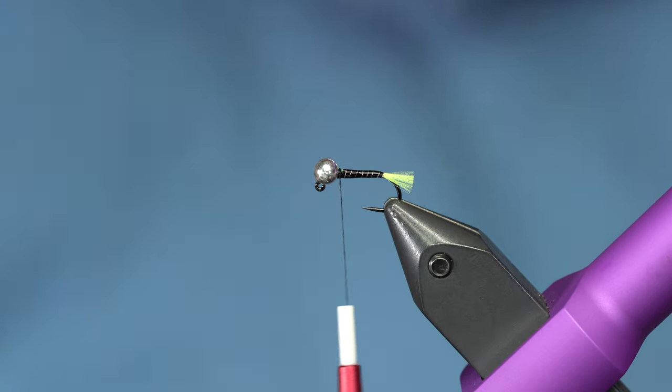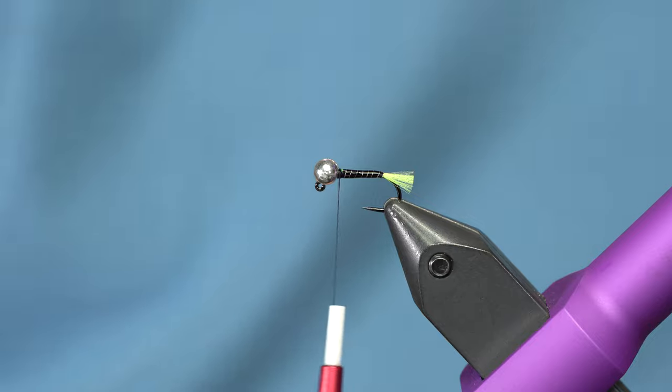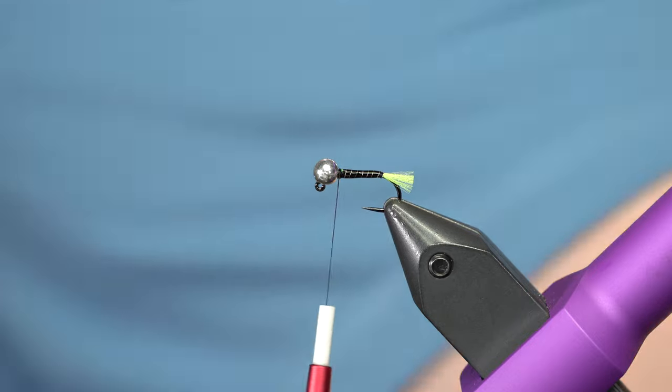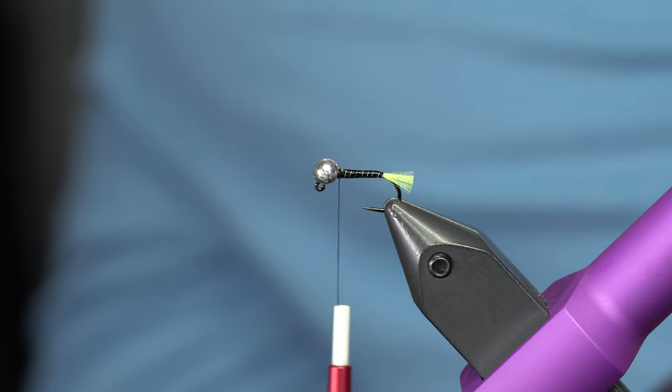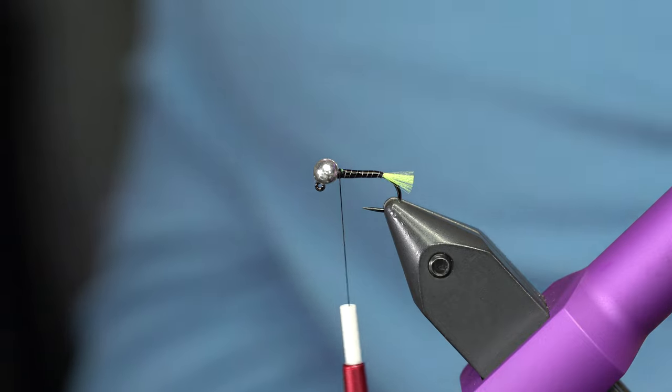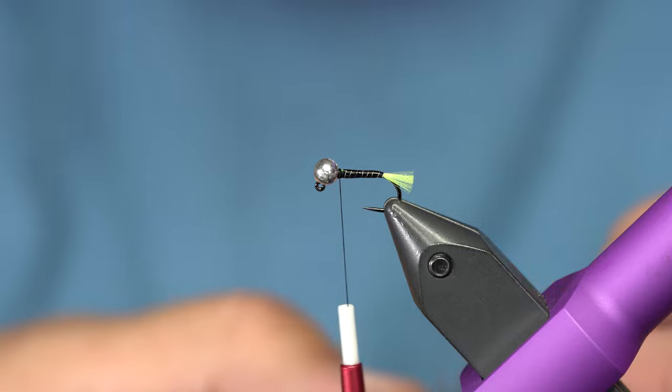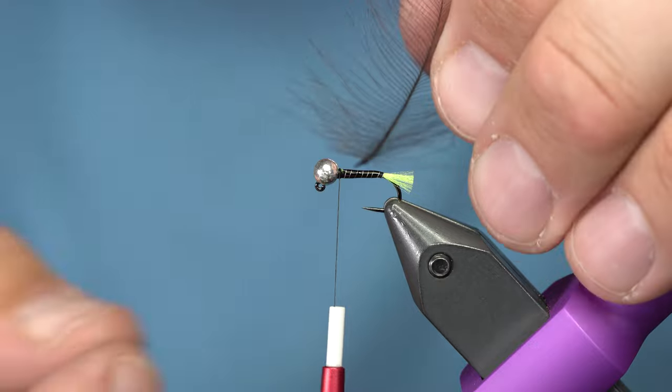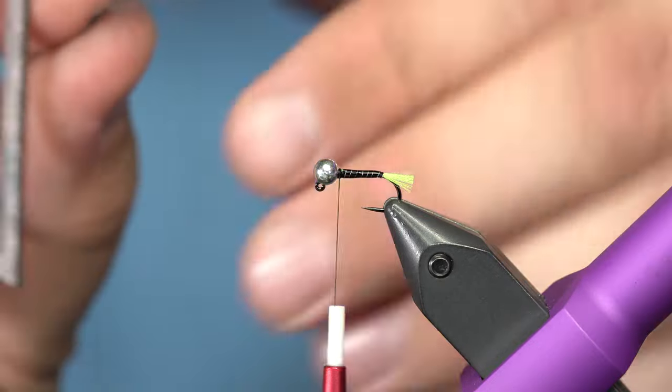Alright, so the soft hackle on this, if that's what you want to call it, it's just going to be CDC. And if you tie euro nymphs and you have some decent CDC like this, you don't need to use a whole side of the feather.